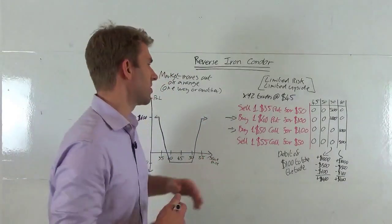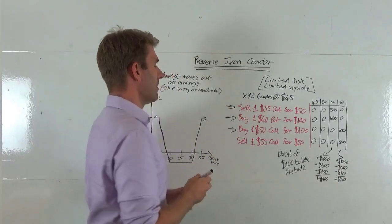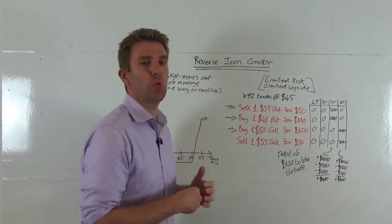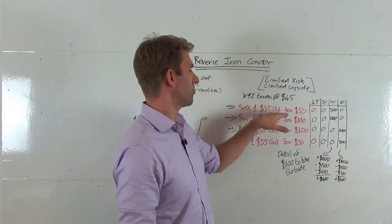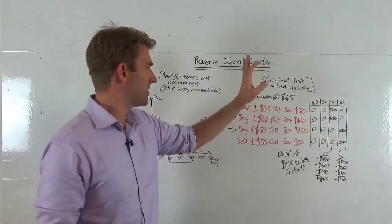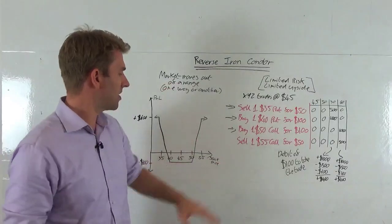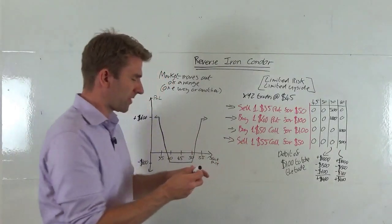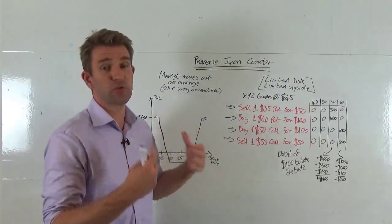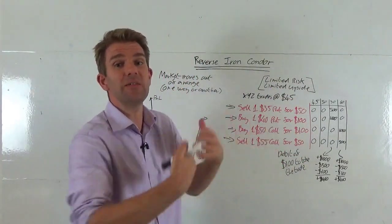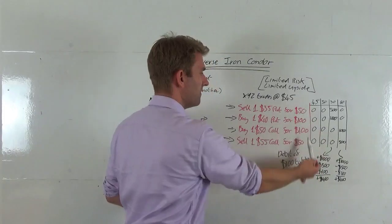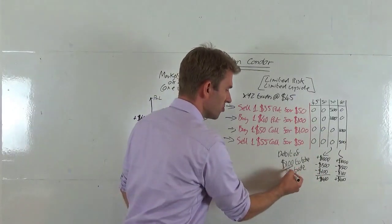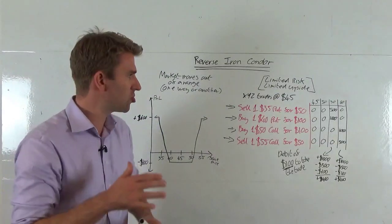We decide where to place our sold options. We think the $35 mark is a good place to sell the put — we think that's pretty much as low as it will go. So we sell one $35 put for $0.50, which gives us $50 in our pocket. Similarly on the upside, we sell a $55 call, also receiving $50. So we've spent $200 but received $100 back, making the net cost $100 debit to take this trade.